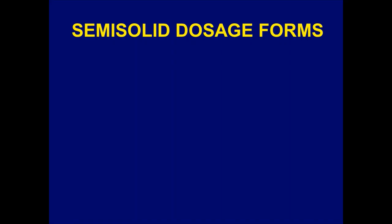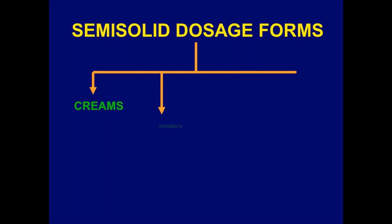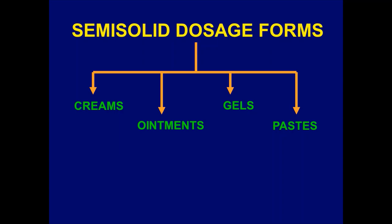Last lecture, we said that semi-solid dosage forms are four main categories: creams, ointments, gels, and pastes. This lecture, we will start studying creams.